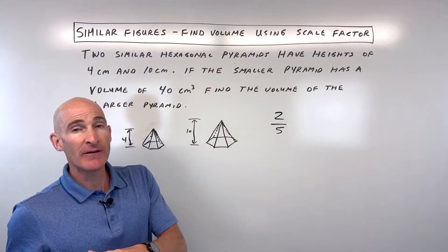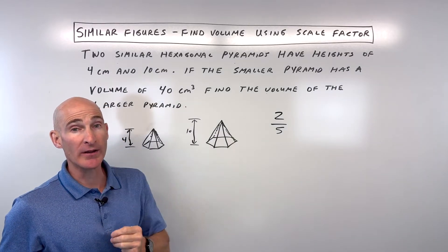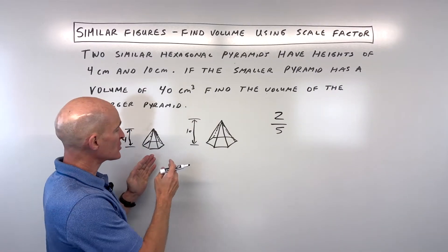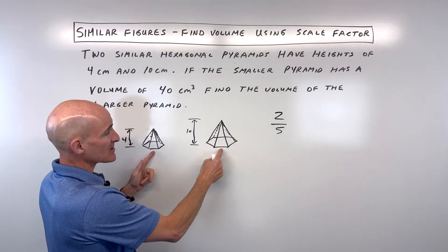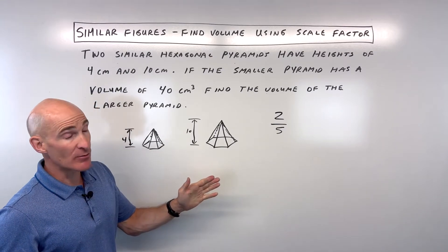But when you're comparing the volume, which is three-dimensional, you have to take that ratio and cube it. If you were comparing the areas, you would square it. If you were comparing the side lengths here, these base side lengths, they would be in the same ratio, 2 to 5, because the pyramids are similar.